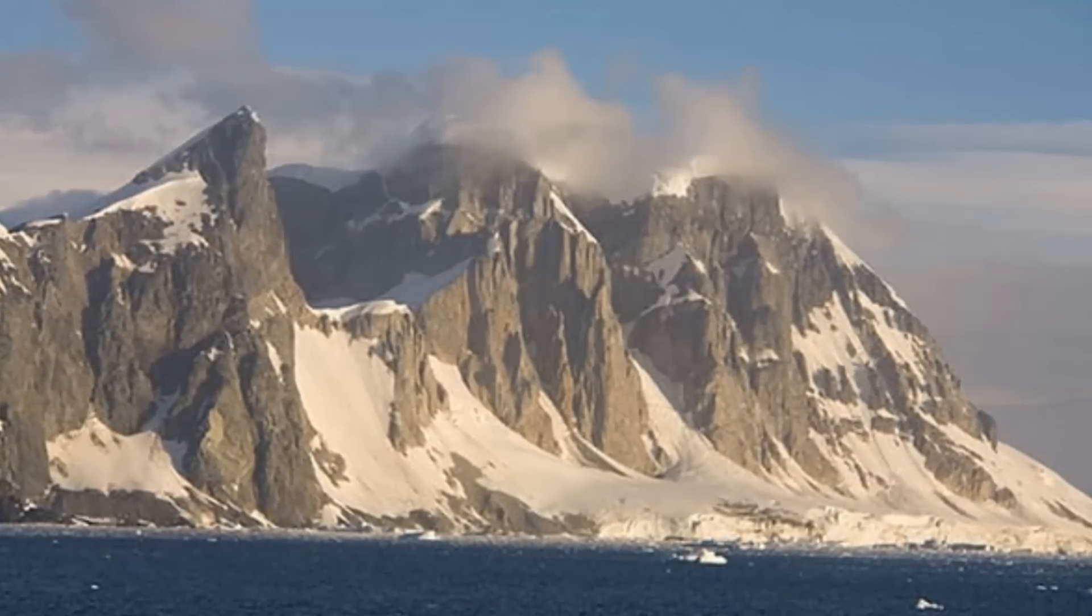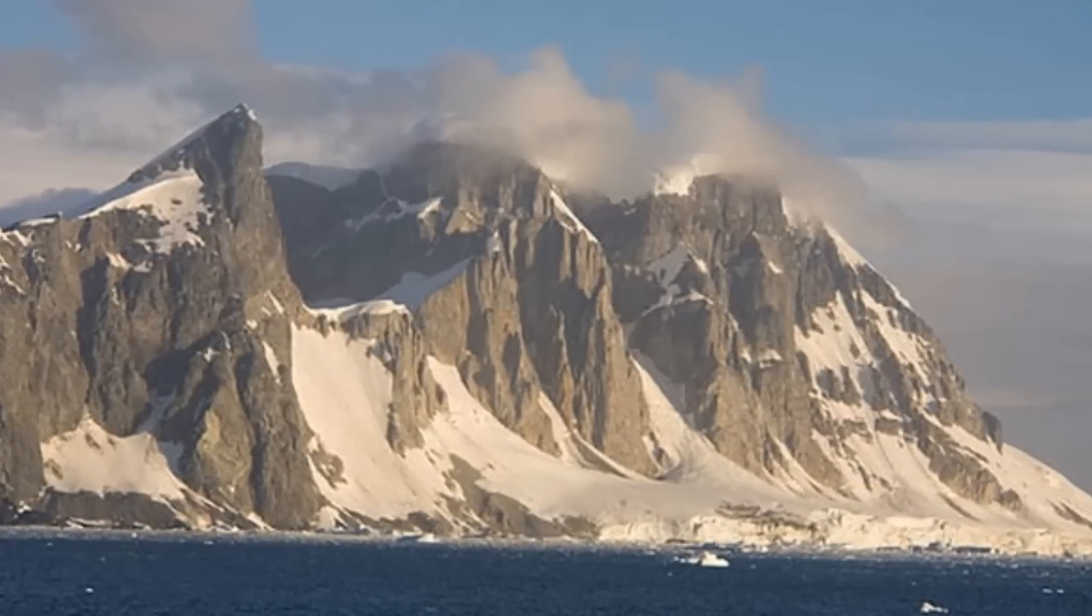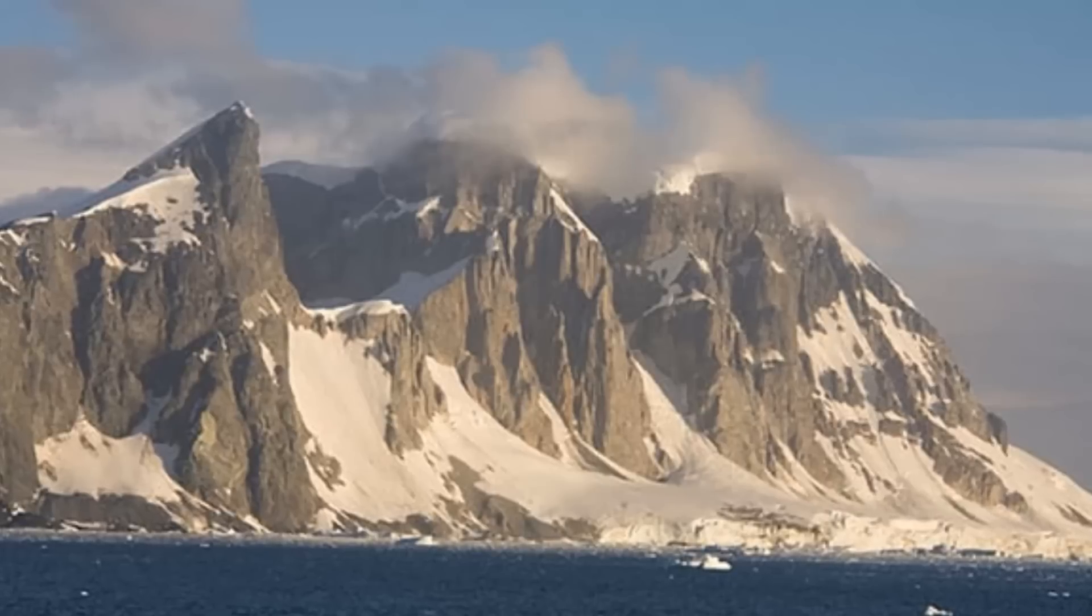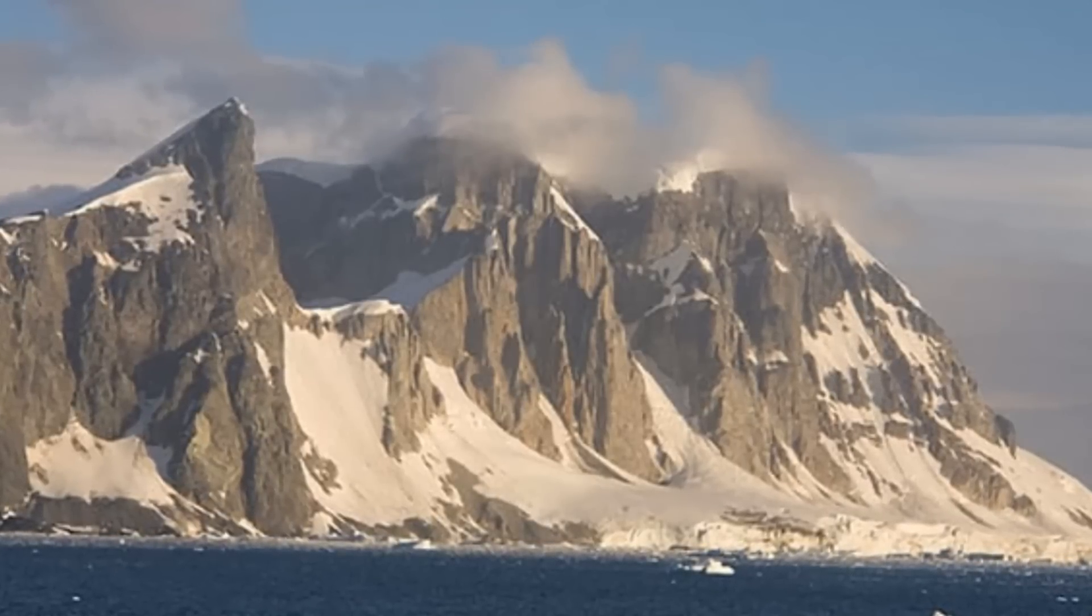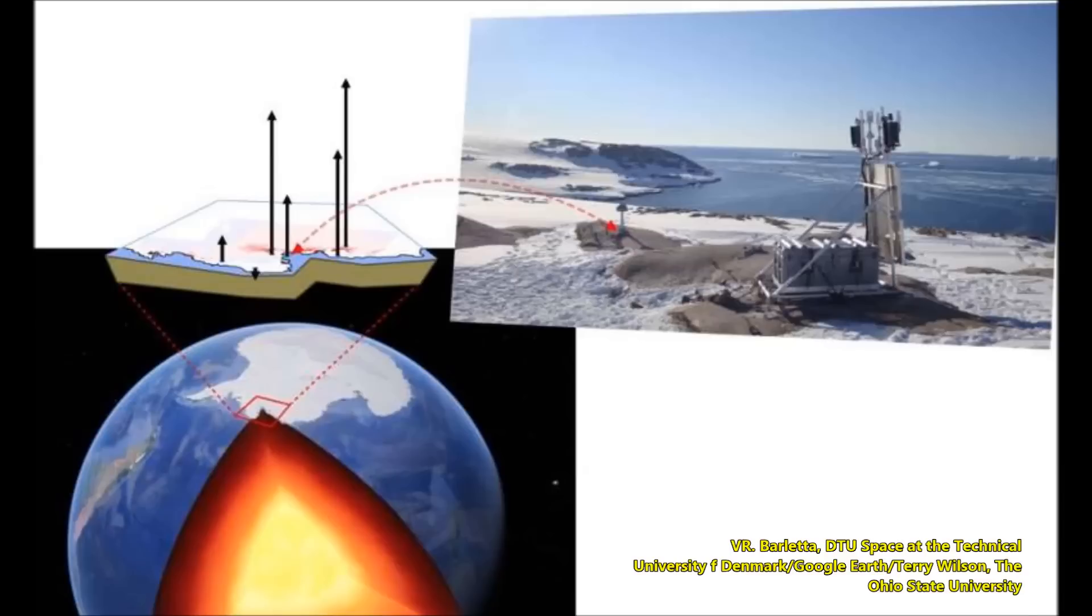The problem is that much of this area of Antarctica is below sea level. Relatively warm ocean water has flowed in underneath the bottom of the ice sheet, causing thinning and moving the grounding line, where the water, ice, and solid earth meet, further inland.